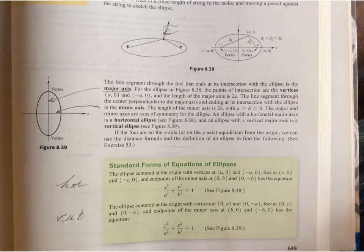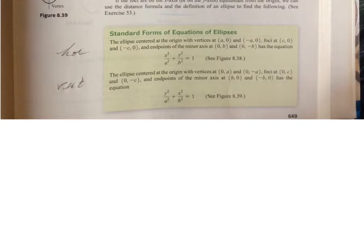What we have below here is the standard forms for the equations of ellipses, and I wrote a little note here: this is for horizontal ellipses and this is for vertical ellipses. So we will be looking a lot at these two formulas as we cruise through this section. Let's go ahead and do example one.